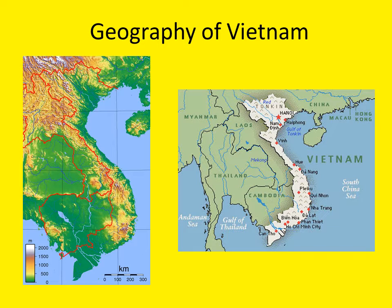Forests previously covered about three-fourths of the country, but deforestation has reduced that figure to about 25% by the year 1980. Much of the deforestation took place with the use of chemical defoliants, such as the notorious Agent Orange, which we'll talk about later in this course, that was utilized by the U.S. Army during the Vietnam War. However, commercial logging and the use of trees as fuel by peasants also have played roles in deforestation.